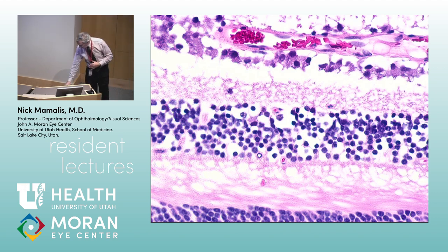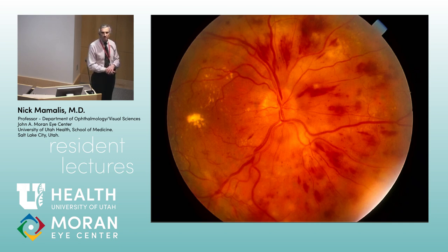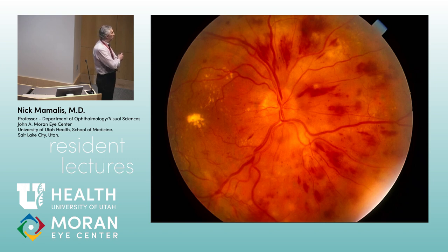Now we'll talk about pathologic entities that affect the retina. Looking at this photo: we see hemorrhages in pretty much all layers — flame-shaped hemorrhages superficially and dot-and-blot hemorrhages deeper, plus some exudate over the macula. Hypertension is probably the most common cause of this appearance, though diabetes can look like this too.